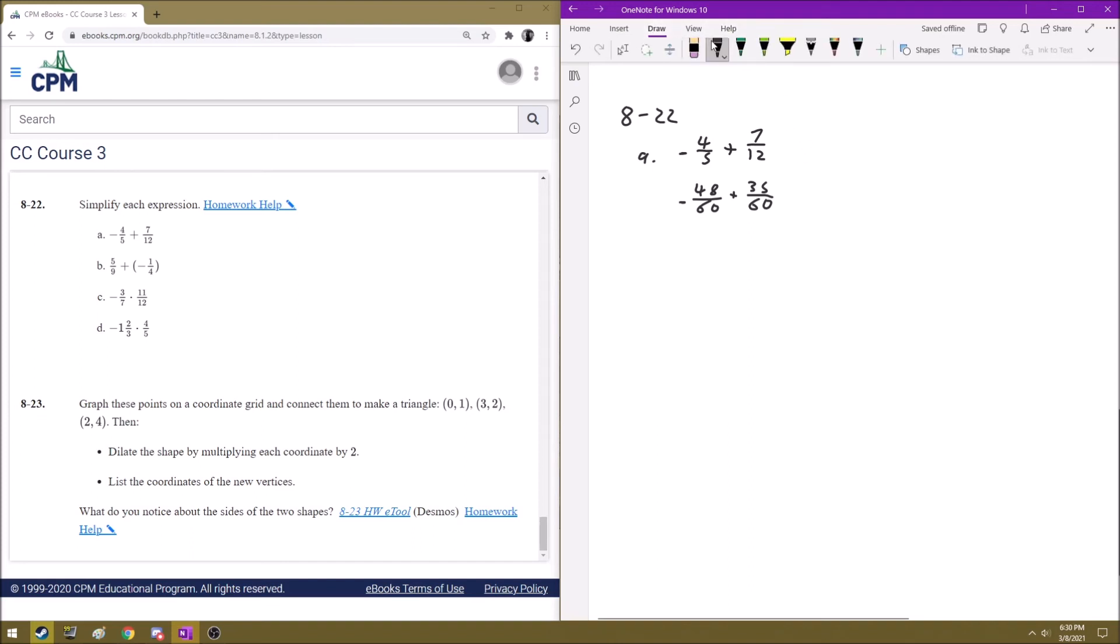Alright, so now all we have to do is do this addition. So we have negative 48 over 60 over here, and a positive 35 over 60 over here. So we can just do negative 48 plus 35, which is going to be negative 13, and that is over 60.